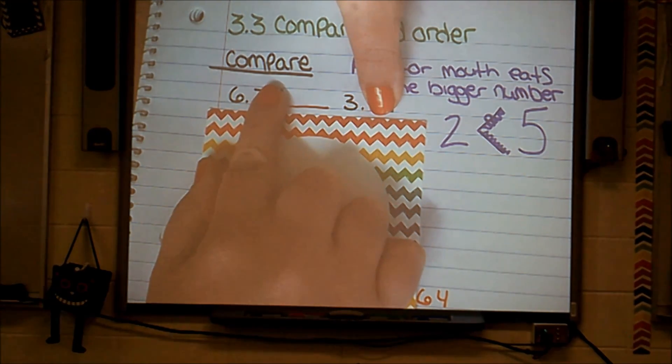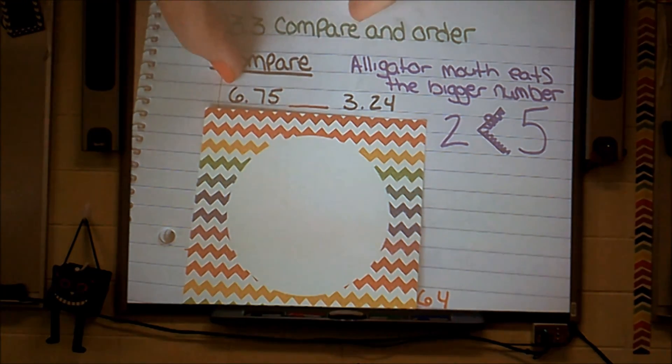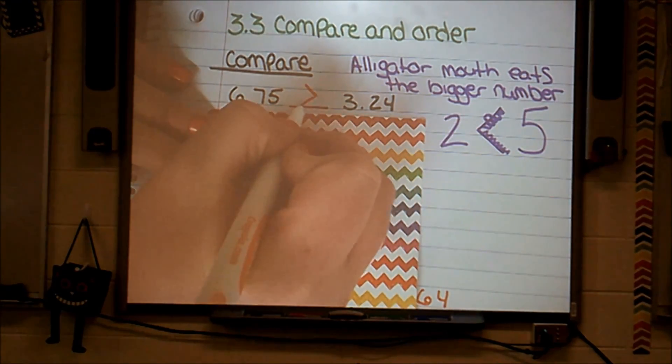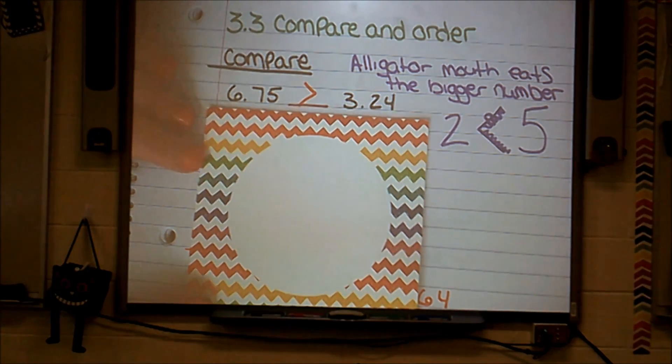But I can look at them and say, which is more? $6 or $3? I know $6 is more, so the rest of it doesn't even matter. Automatically, because I have more dollar bills on this side than I do on that side, my $6.75 I know is the winner. And the alligator takes that money and goes shopping.